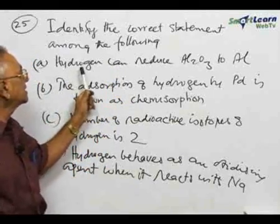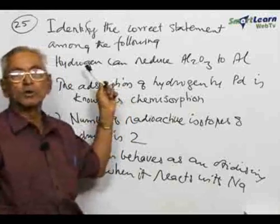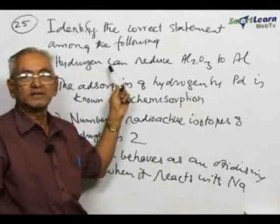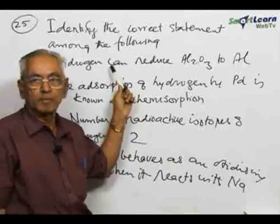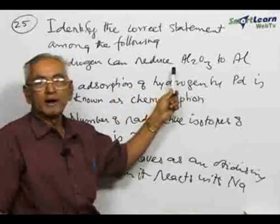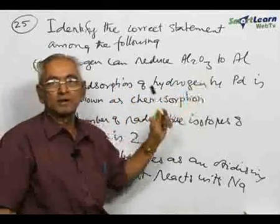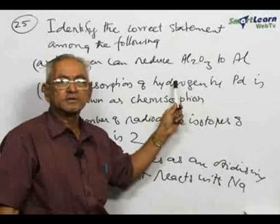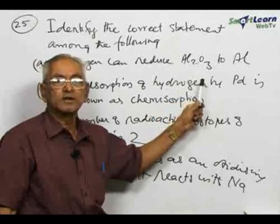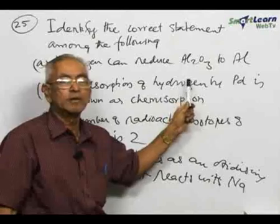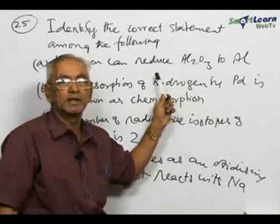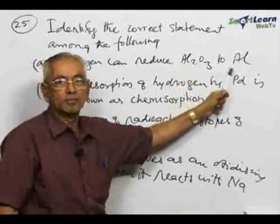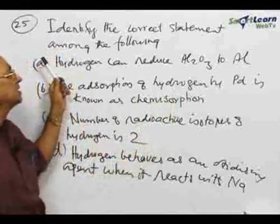The first statement is: hydrogen can reduce. Hydrogen, as we all know, is a good reducing agent. It is used in the extractive metallurgy of elements where metal oxides can be reduced to the metal. But aluminum oxide is not easily reduced because of the great affinity of oxygen for aluminum. Therefore, aluminum oxide is not easily reduced by hydrogen to give rise to aluminum. Therefore, statement one is not correct.